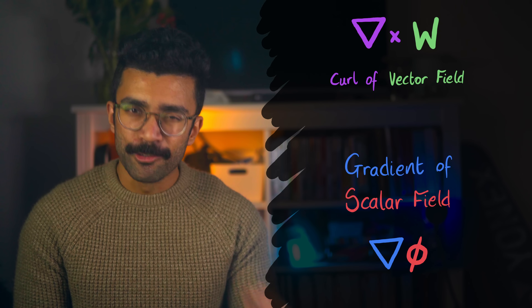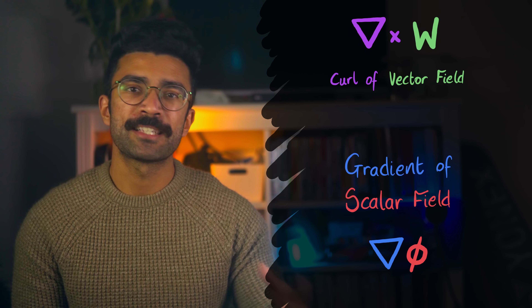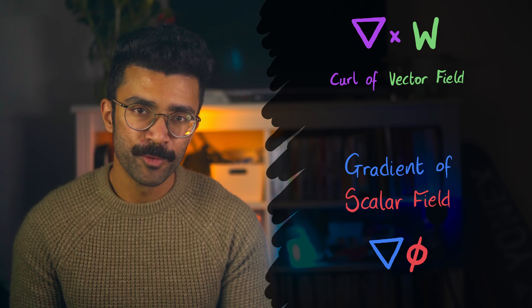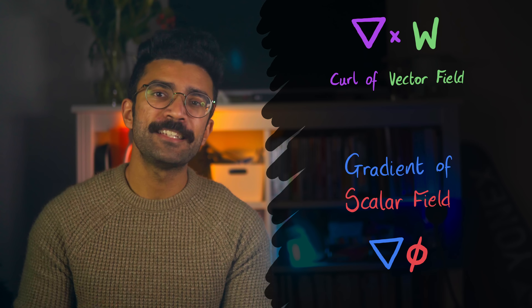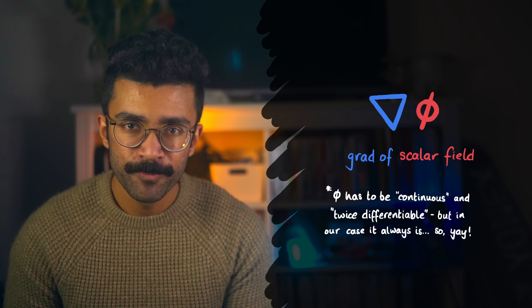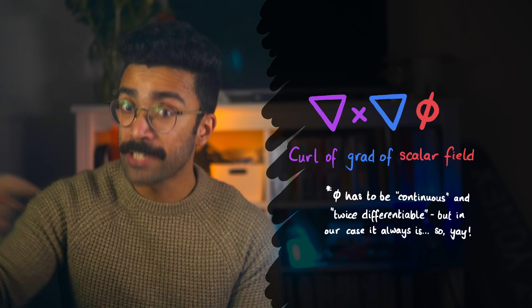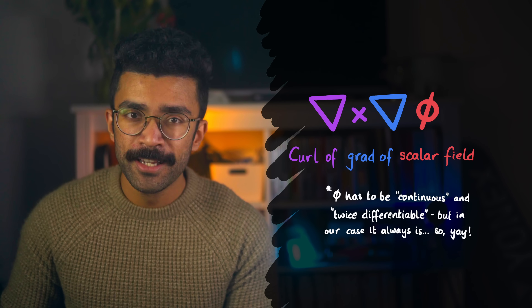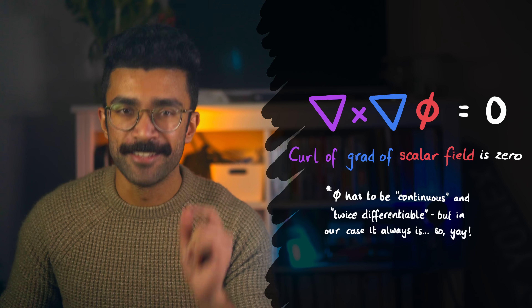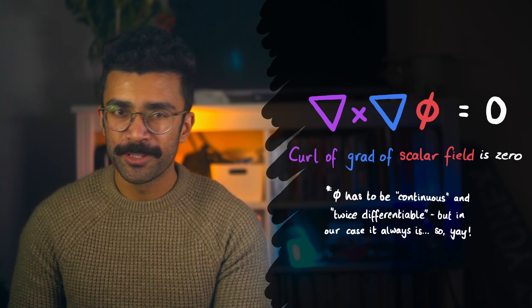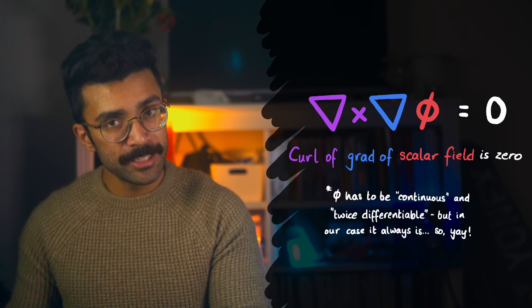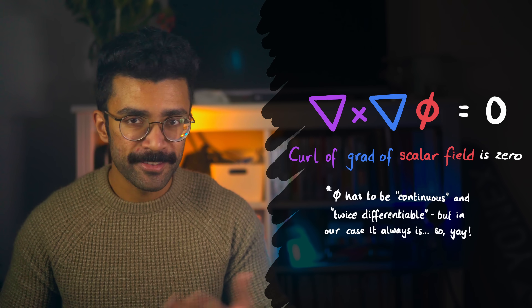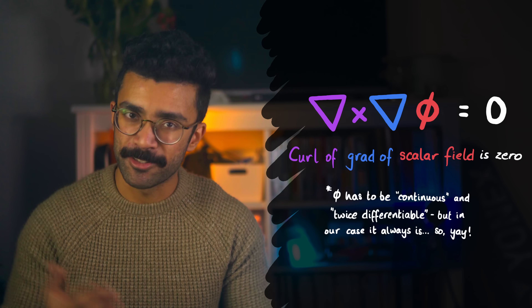As it so happens, the way that gradient and curl are mathematically defined results in something really fun. It turns out that if we start with any scalar field and find its gradient, and then find the curl of that gradient field, then the result is always zero. This has nothing to do with the original scalar field — it's just because when we find the curl of the gradient of a field, there are bits of math that essentially cancel each other out.